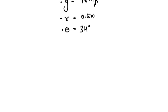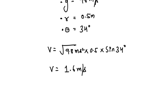So the speed of the ball is the square root of 9.8 meters per second squared times 0.5 times sine 34 degrees, which comes out to be 1.6 meters per second. This means that the ball needs to be moving at least 1.6 meters per second in order to maintain a circular motion with a radius of 0.5 meters and a string angle of 34 degrees.